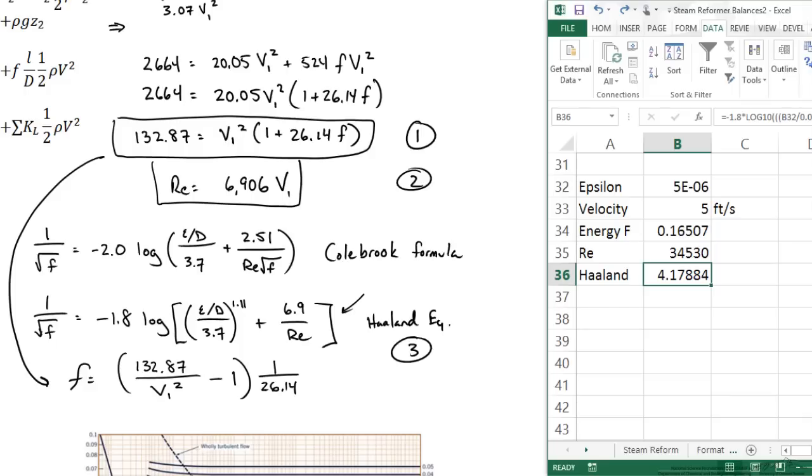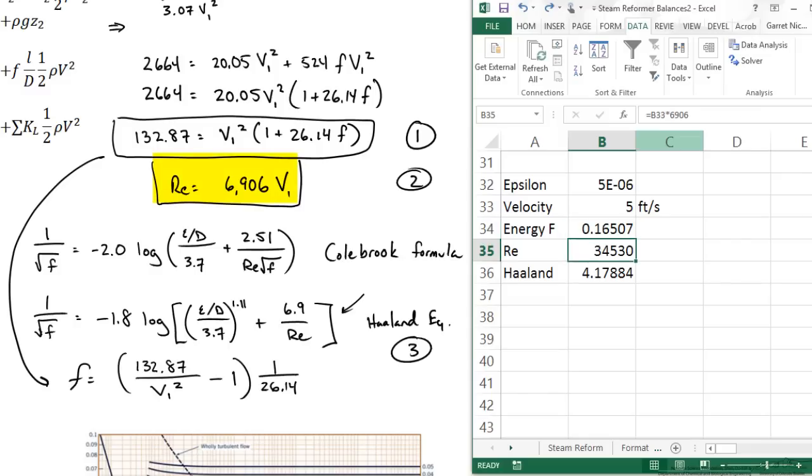So I have Excel open here on the right side just to show you how I set this up. Epsilon, our surface roughness, is something that we need in both equations and the Moody diagram and that is something we would look up for copper piping. In this case it is 5 times 10 to the minus 6 feet. So I have that in our equation sheet plus I am guessing a velocity of 5 feet per second. So I am just starting there and using it as a reference. Now this energy f is my equation at the bottom to calculate the friction factor based on the velocity. I also have the Reynolds number which is 6906 times the velocity.